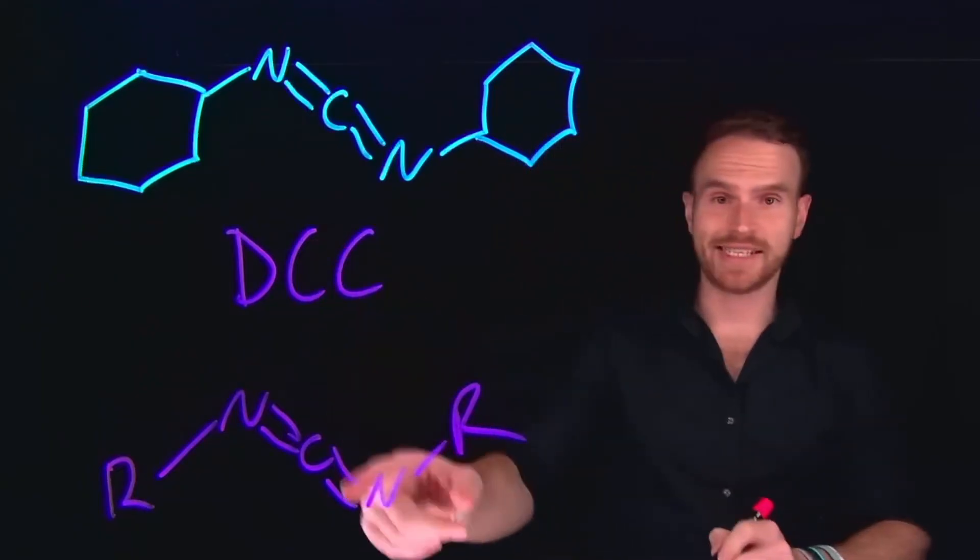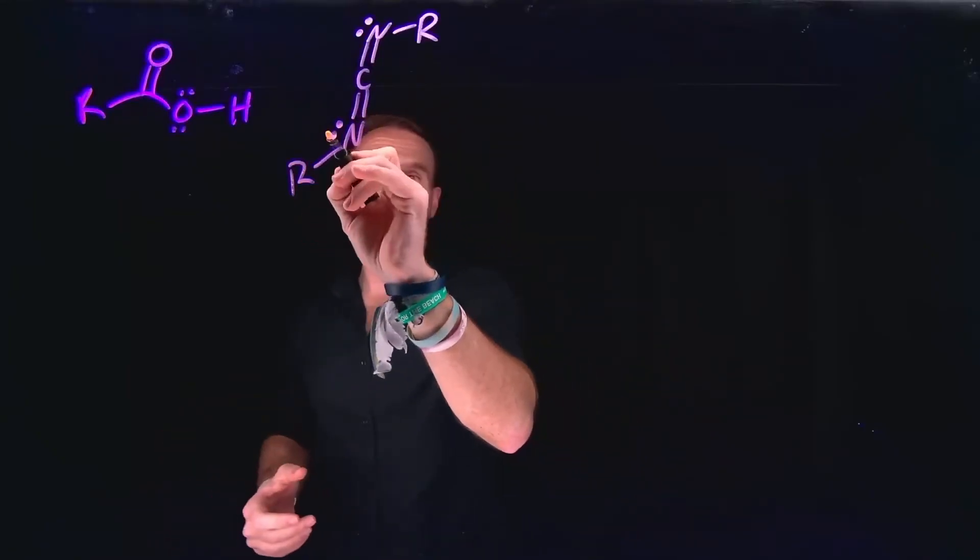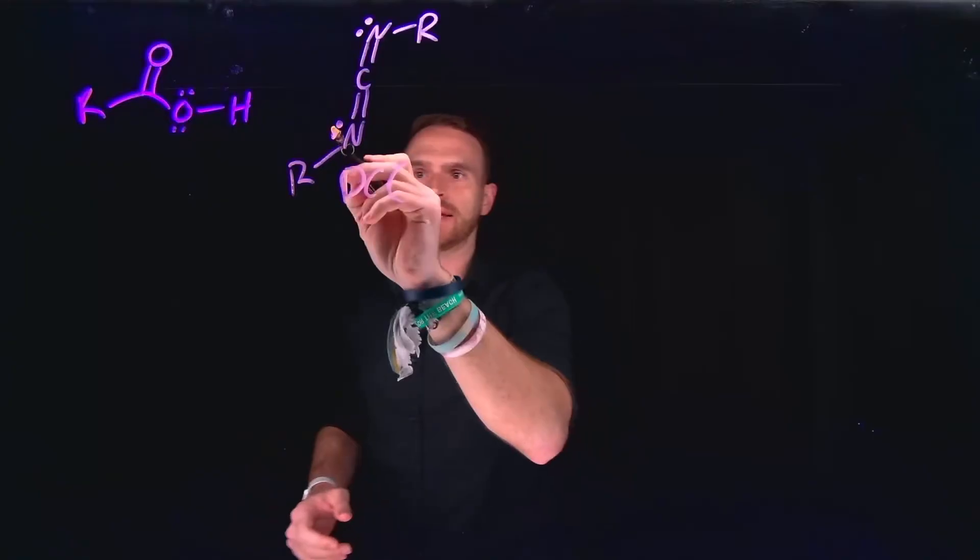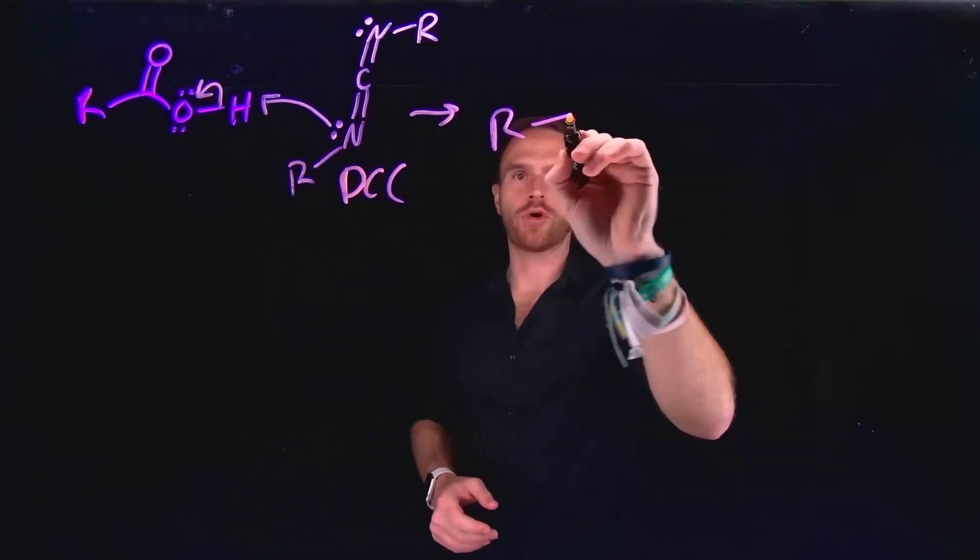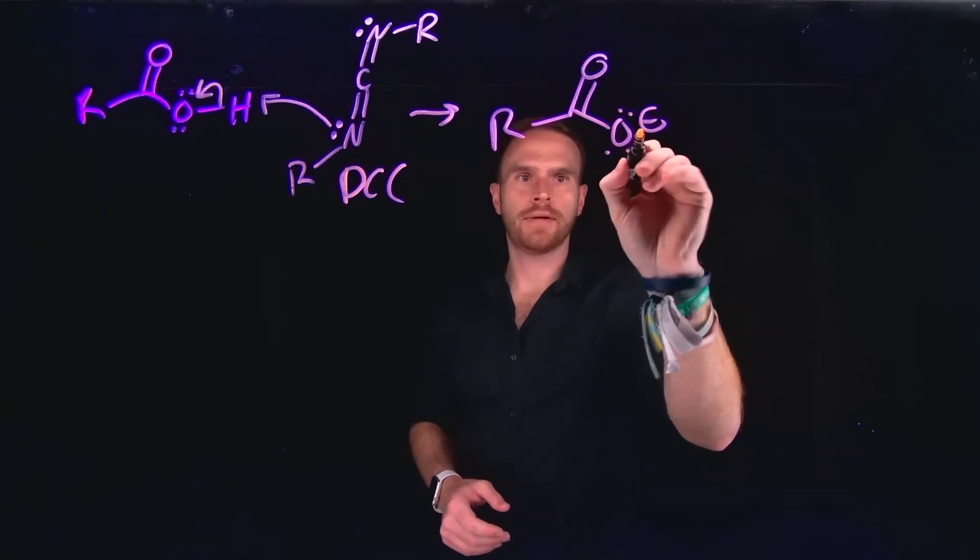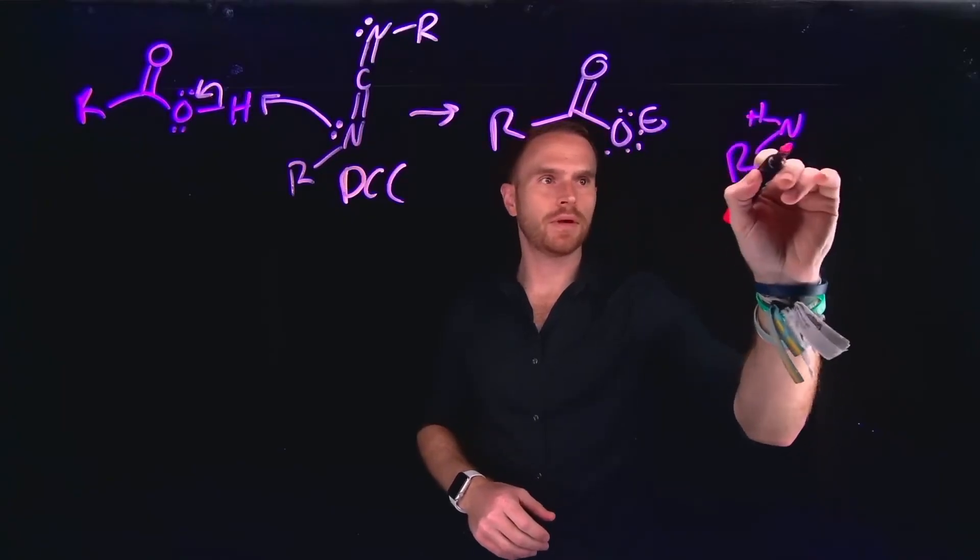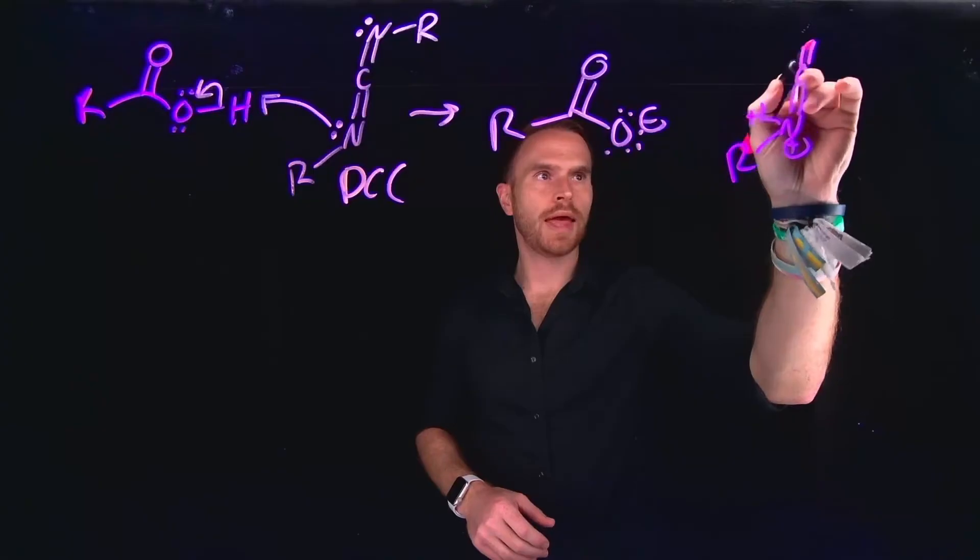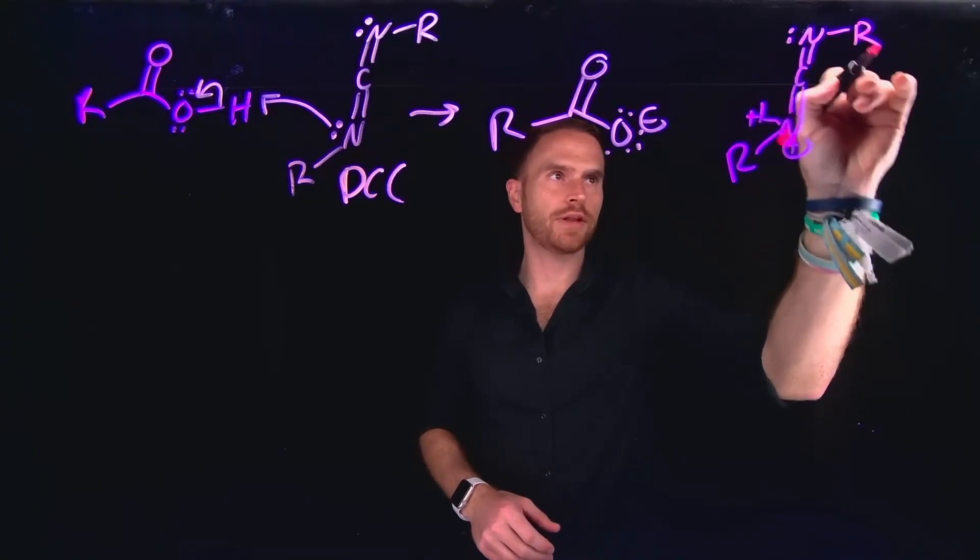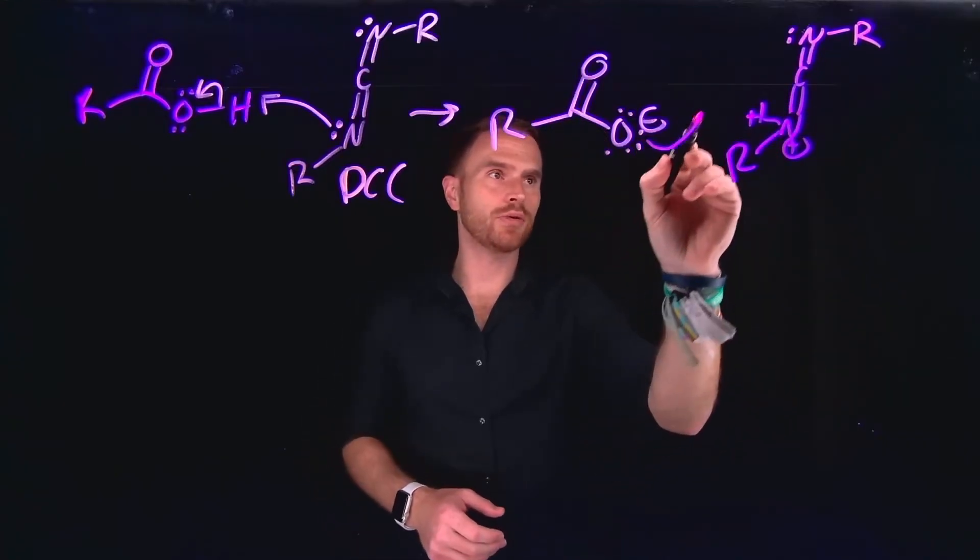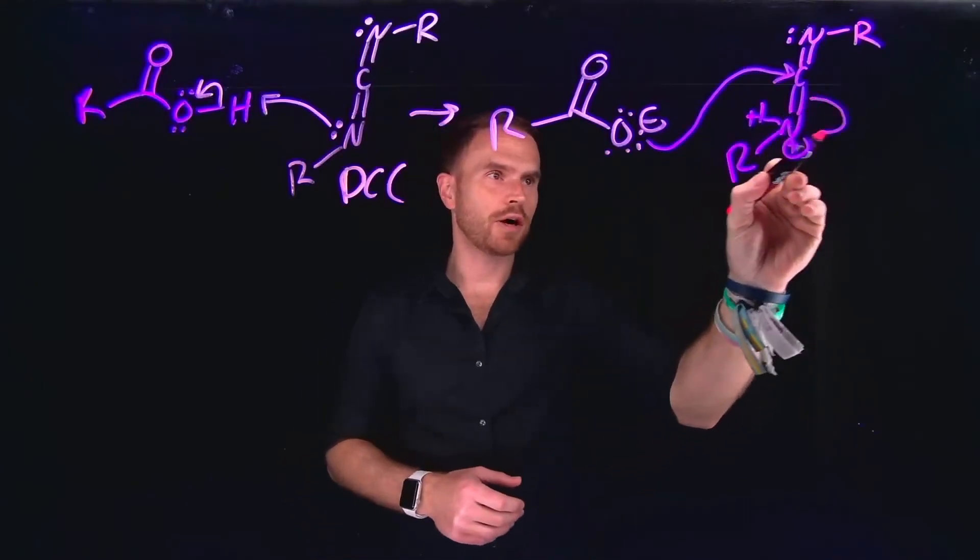The mechanism of this coupling reaction occurs first via proton transfer, where the DCC can act as a base and deprotonate the carboxylic acid. This is, in turn, going to form a carbamate, which can further react. Importantly, we still have our protonated DCC, which has been formed over the course of this reaction, and notice that there is now a very electrophilic carbon, which can be attacked by the newly formed nucleophile, or that carboxylate group.